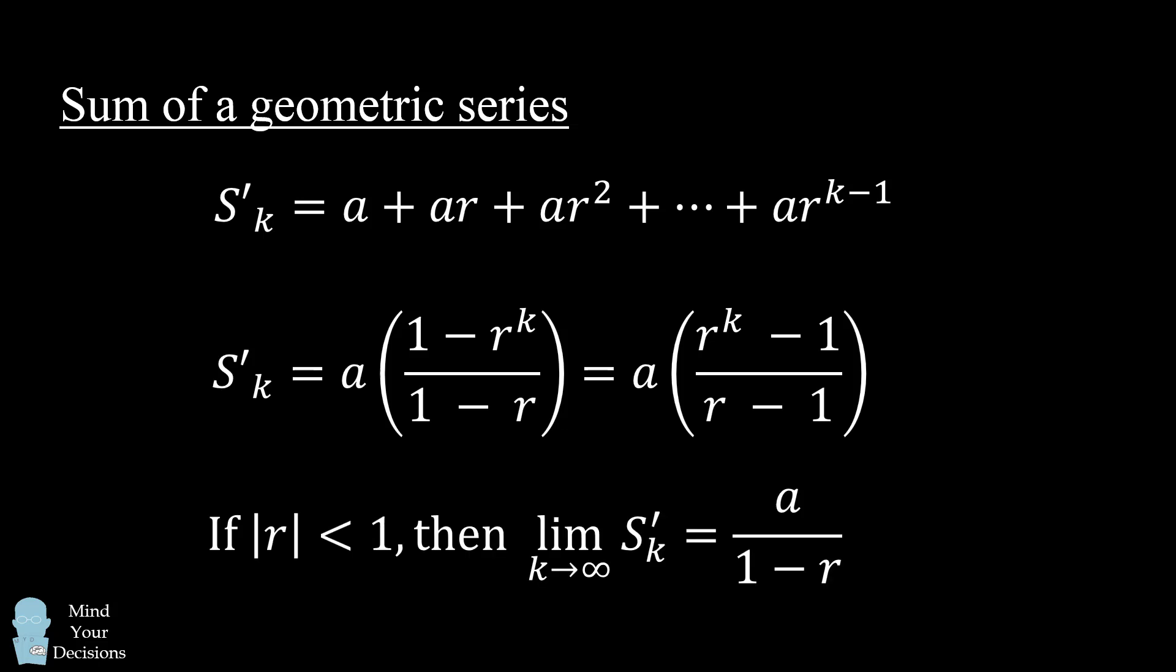For completeness, I'll mention that if we were dealing with an infinite series, if our common ratio has an absolute value of less than 1, then we could find the sum of the infinite series by taking the limit as k goes to infinity, and this will become the well-known formula of the sum of the geometric series, which is a divided by 1 minus r.